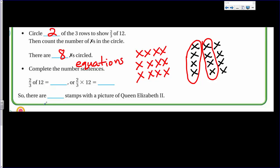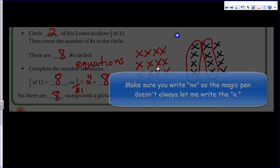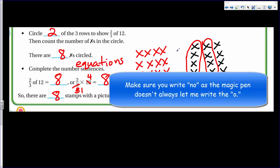Complete the number sentences or I like the word equations. Or these more, actually these are equations or expressions. Two thirds of 12 is equal to eight or two thirds times 12. We have that same situation. If we divide out a common factor of three, we get one. Divide out of three, we get four. Two times four, eight. So there are eight stamps with a picture of Queen Elizabeth, the second on it. Yes. That is part of the code word. Those two letters. Make a note of it.